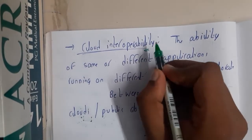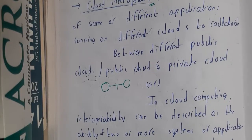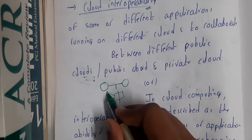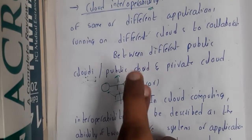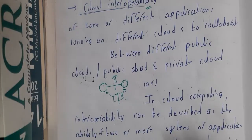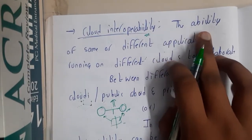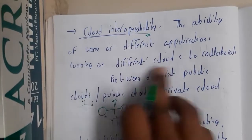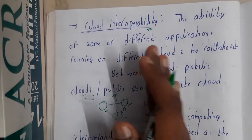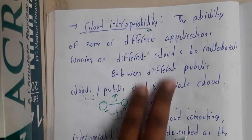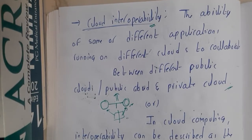Now let us go through cloud interoperability. Inter means between something, and you can operate things — that is the meaning of interoperability. It is a concept where a single task can be broken into two parts, and these two parts combinedly give you the result. Basically, two clouds are interlinked and operating together in a proper way to fulfill your task. The ability of same or different applications running on different clouds to collaborate — half the application runs on one cloud and the other half on another, and both clouds combinedly perform the full application.